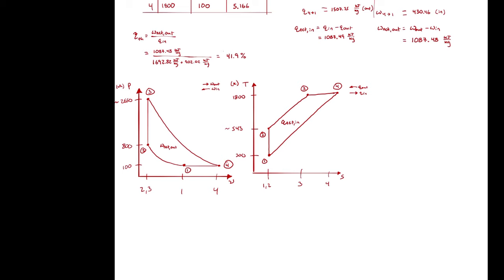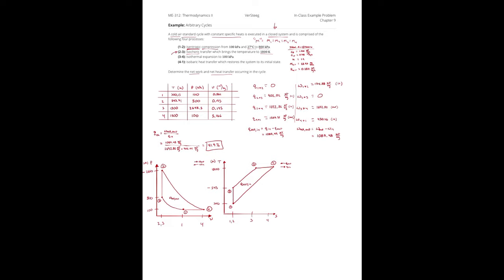Now that we have this skill set, we can analyze more realistic power cycle models — the Otto cycle, diesel cycle, Brayton cycle, Atkinson cycle, Stirling cycle, and Ericsson cycle. Remember that the specific assumptions of each named cycle are layered on top of this general power cycle analysis framework. Don't get lost in the minutia of those specific model assumptions; the underlying analytical process remains the same.